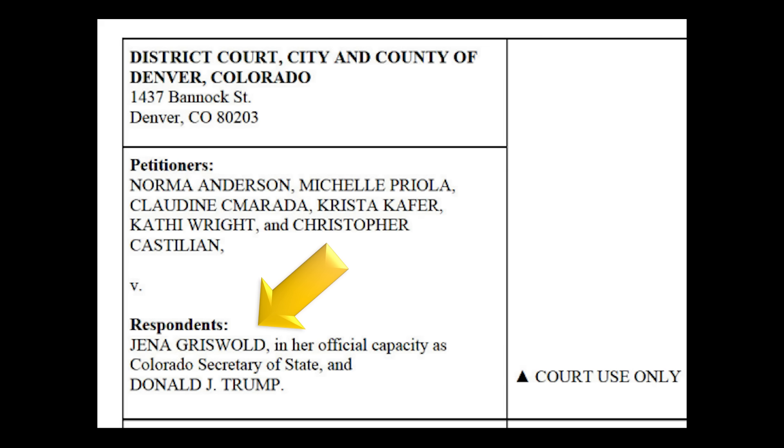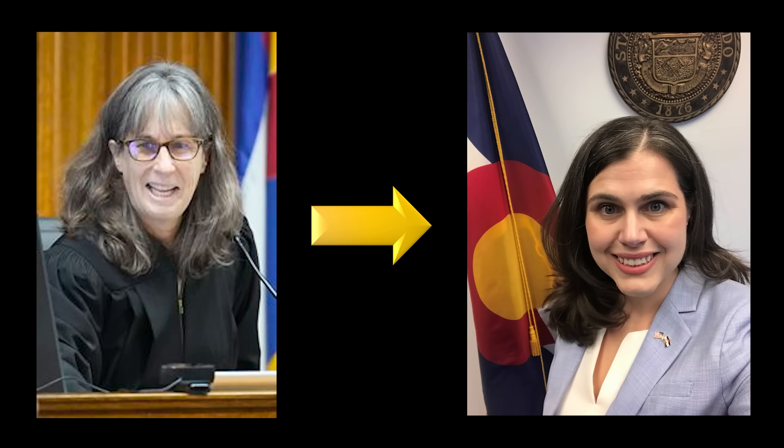Hold on — it gets worse. It turns out that she has previously given hundreds of dollars of contributions to all Democrat candidates, including the Secretary of State, Jenna Griswold. The Secretary of State is the person responsible for running the elections in Colorado and is named as a party in this lawsuit against Trump. So this judge directly gave money to the person involved in this lawsuit. How can she possibly be impartial?